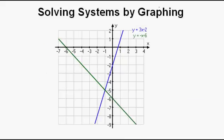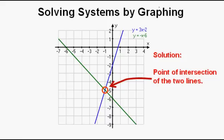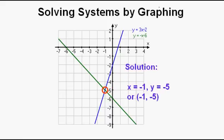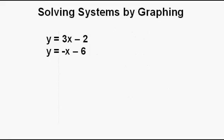Let's look at this system of equations — the equations represented by the blue line and the green line. The solution to this system is the point of intersection between the two lines, and we can say that the solution is defined by a coordinate pair. Now let's take a look at this system: y equals 3x minus 2 and y equals negative x minus 6.